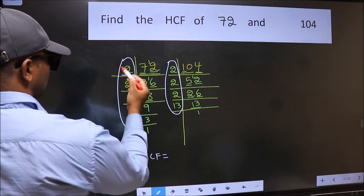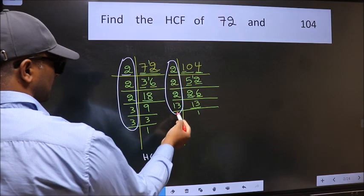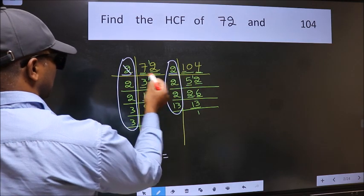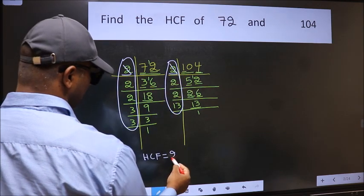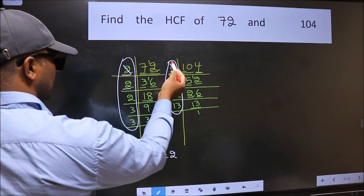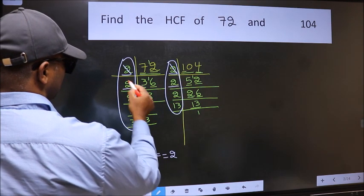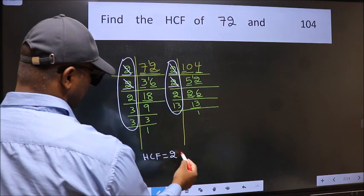Starting with the number 2. Do we have 2 here? Yes. So cut 2 right here. Next number 2. Do we have 2 here? Yes. So cut 2 right here.